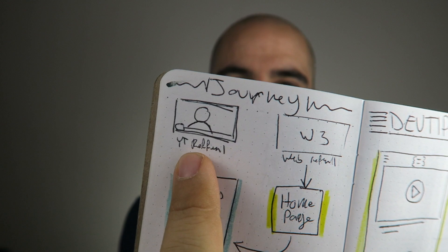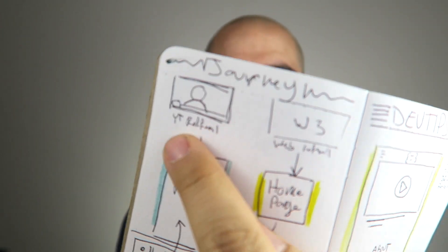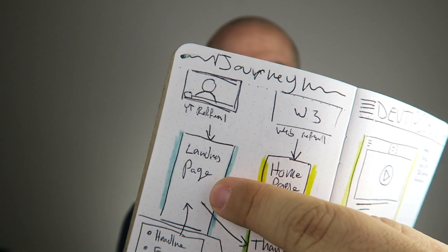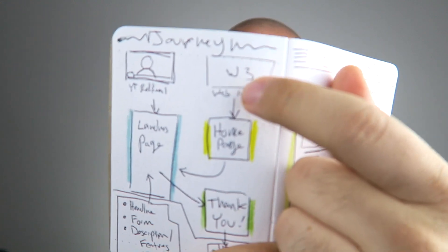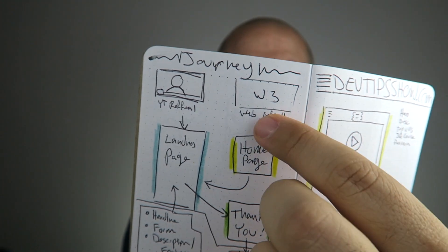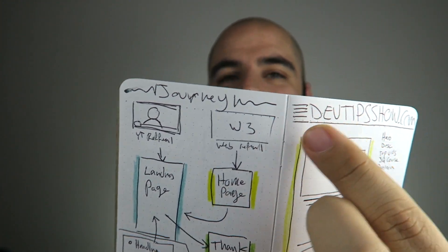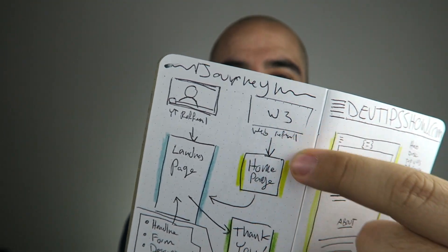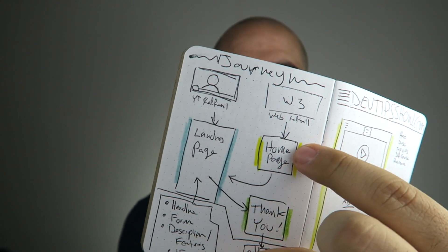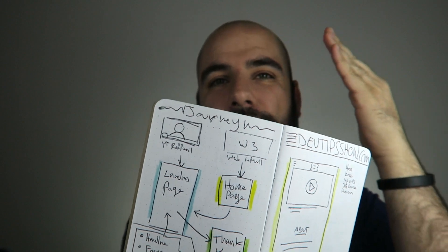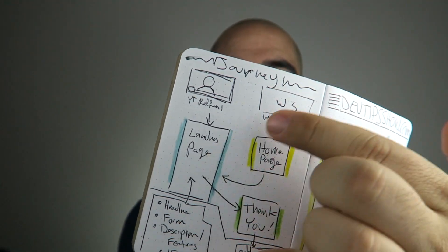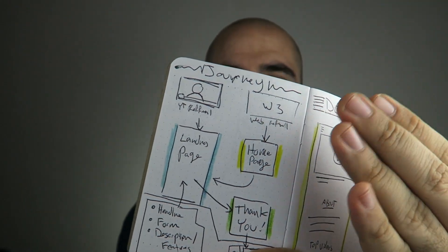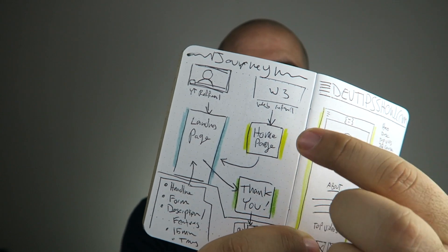One path is a YouTube referral — somebody sees my video on YouTube and goes directly to a landing page, the jQuery sales page. I'd be like, at the end of the video, 'I have a course for jQuery, go sign up.' Another entry point is from the web — somebody finds a link on Twitter or Designer News — they'll probably end up on the DevTips homepage before the landing page. So we have two entry points: directly to the landing page, or to the homepage itself.